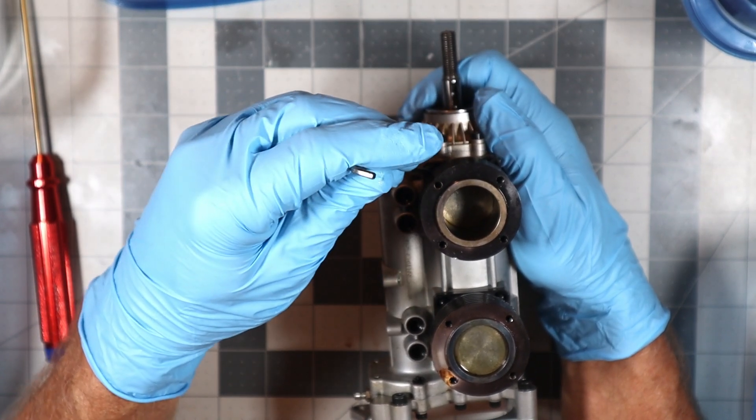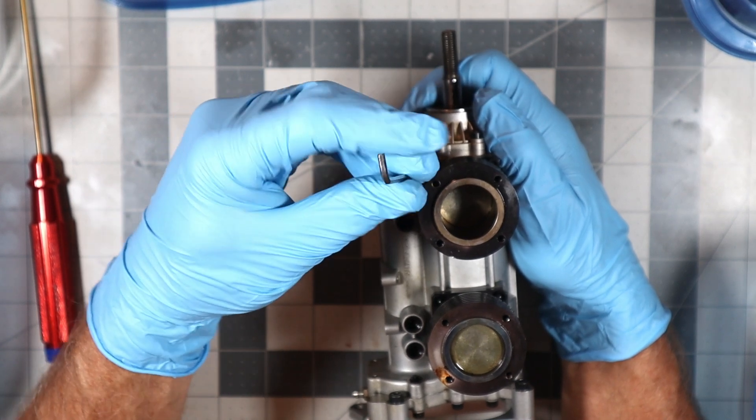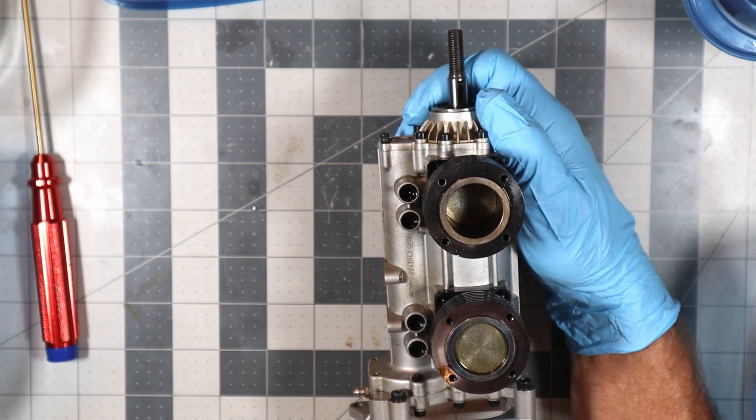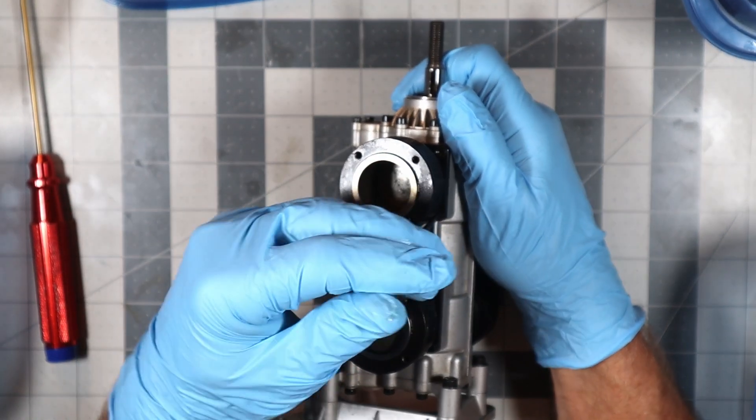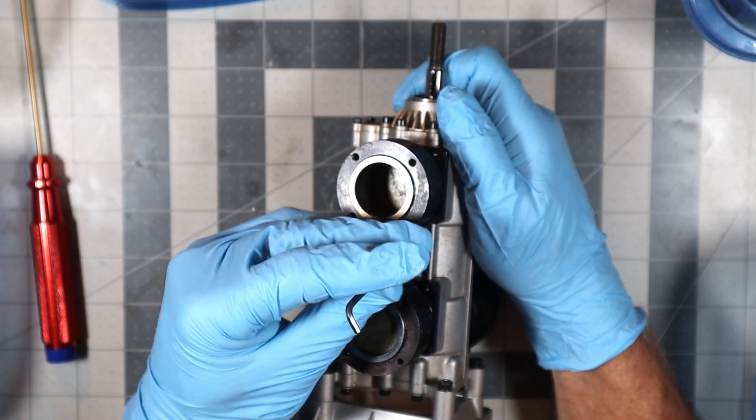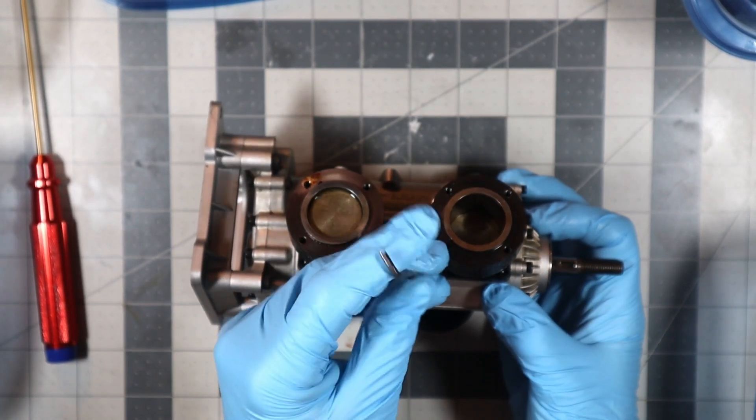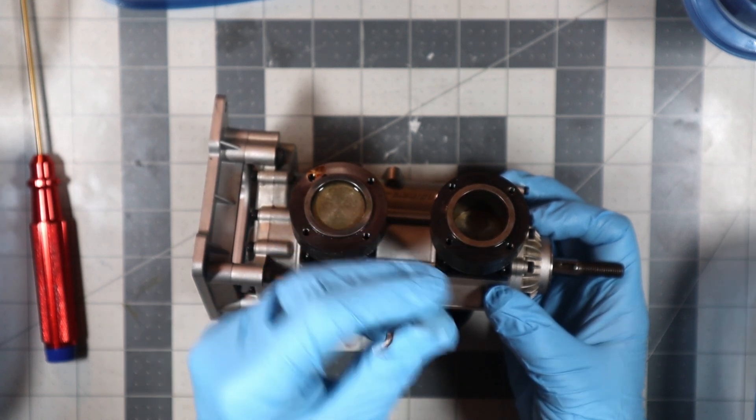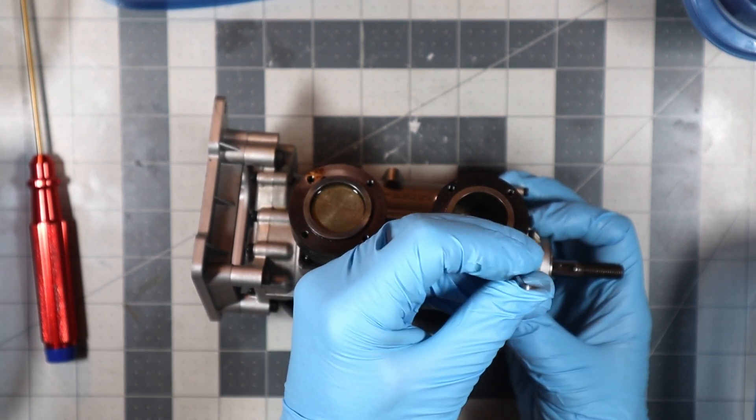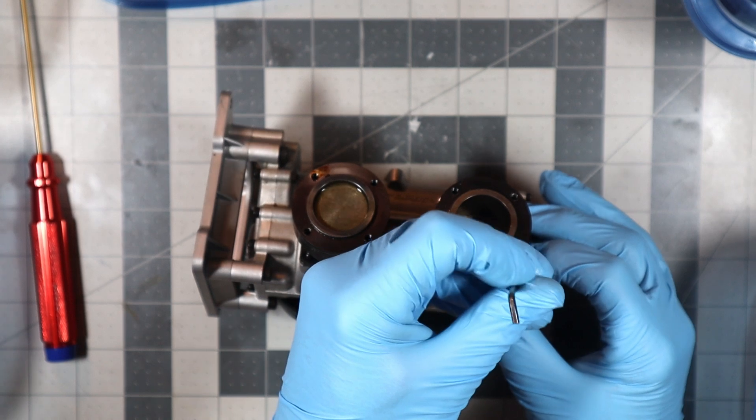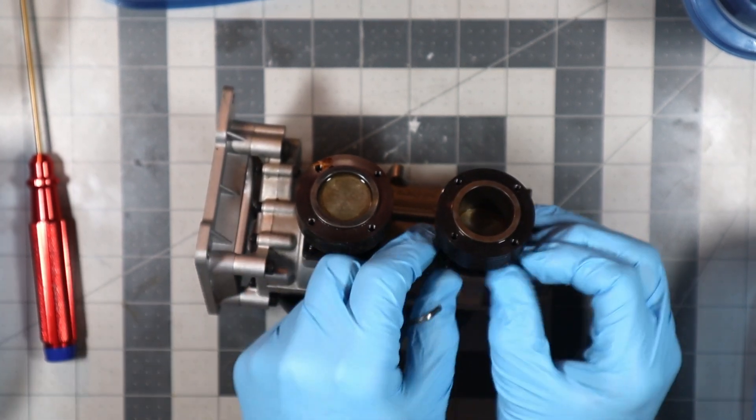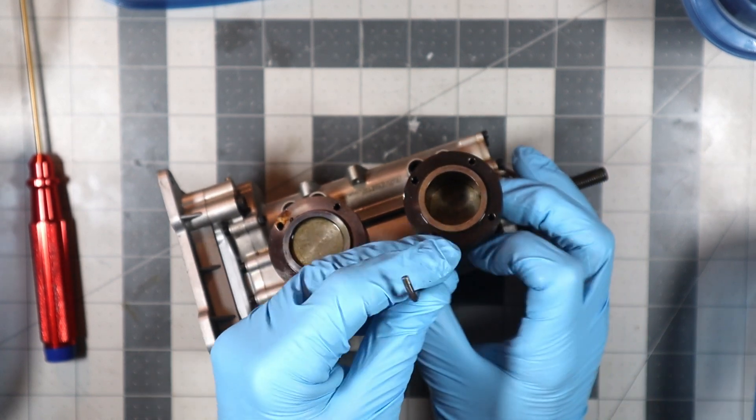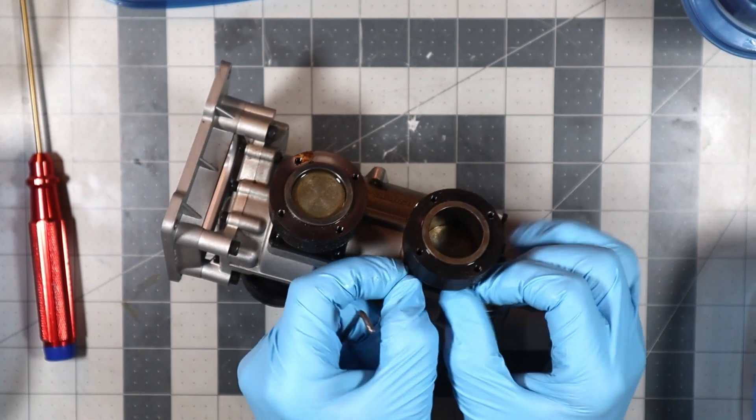Now in theory what's going to happen is we'll see the piston exposed and we get access to connecting rods, because the connecting rods have to come off to actually fully disassemble this engine. The fact that the engine doesn't turn over is the big question here and the big issue as to what is going on, and I don't think we're going to understand why that is until I get the fourth cylinder off.